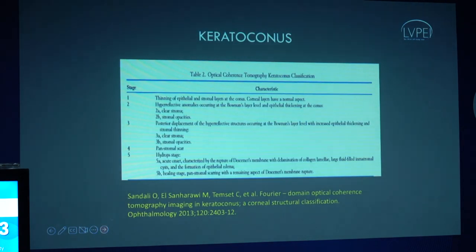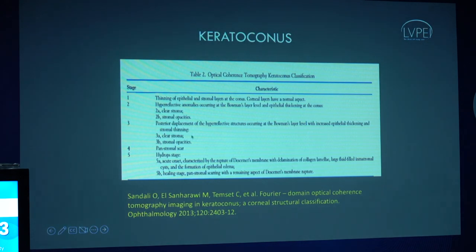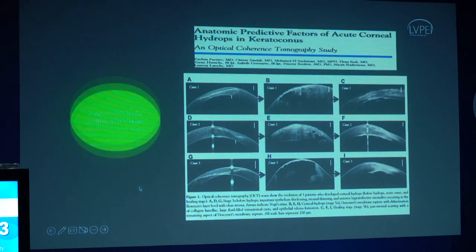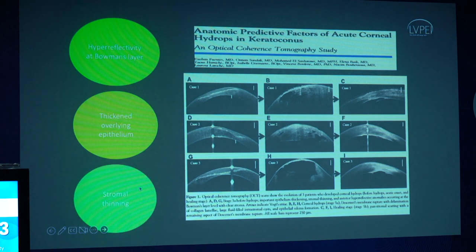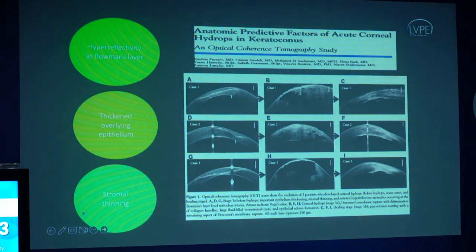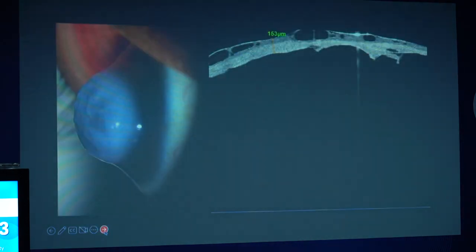Moving on to keratoconus, the OCT classification utilizes the thinning of the epithelial and stromal layers of the cornea, the hyperreflectivity of Bowman's layer, and stromal thinning, which is divided into 5 stages. A study looking at predictive factors for acute corneal hydrops in keratoconus identified three major points: presence of hyperreflectivity at Bowman's layer, a thick overlying epithelium, and adjacent stromal thinning.